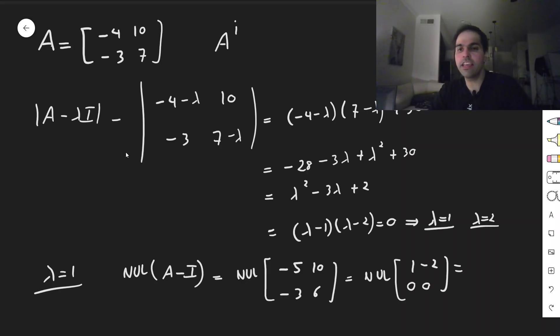And then just think, which combination would give you 0? Well, 2 times 1 plus 1 times minus 2 is 0, so it's a span of 2, 1.